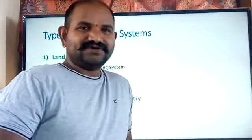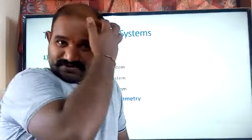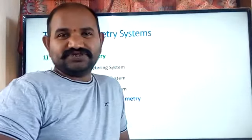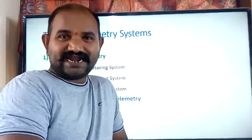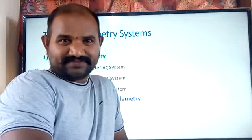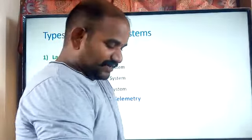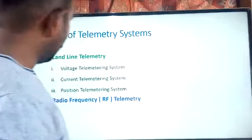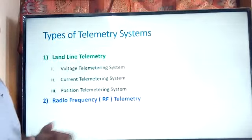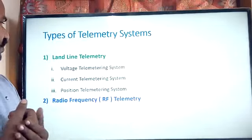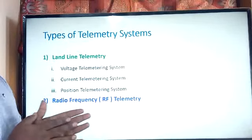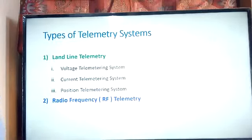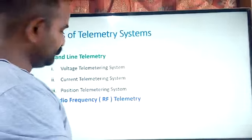Good afternoon students. Today we are going to see the position telemetering system, which is one of the types of the landline telemetering system. In the landline telemetering system we have different types: voltage telemetering system, current telemetering system, and position telemetering system. We have already seen the voltage telemetering system.